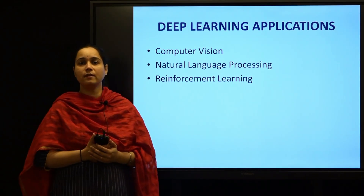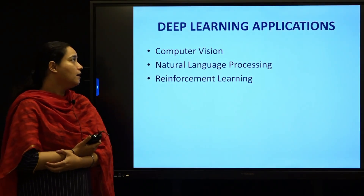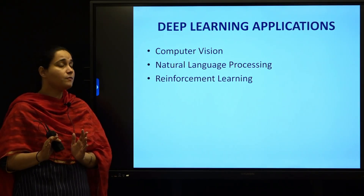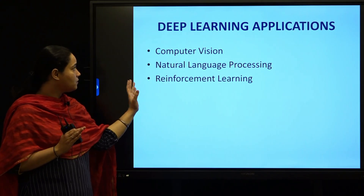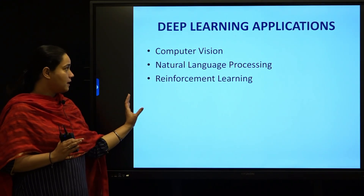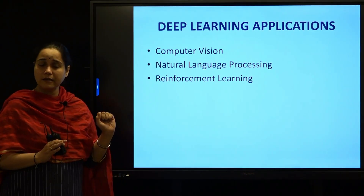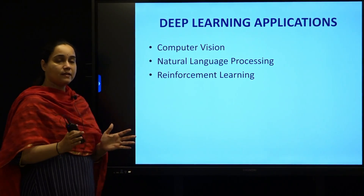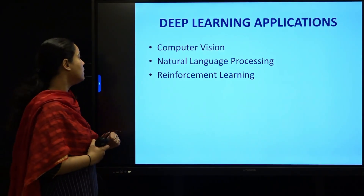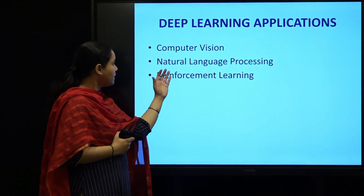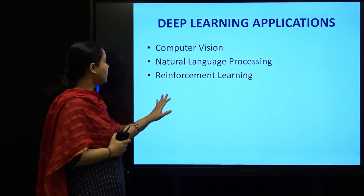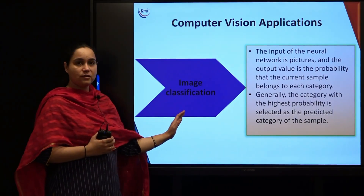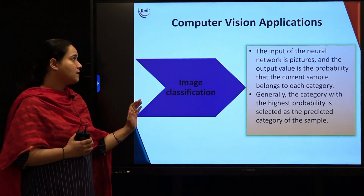Now we are going to see applications of deep learning. They can be classified as: deep learning applications in computer vision, deep learning applications in NLP, and deep learning applications in reinforcement learning. We will look at each of them in detail. The first is computer vision applications of deep learning — starting with image classification.